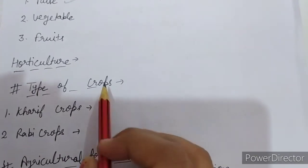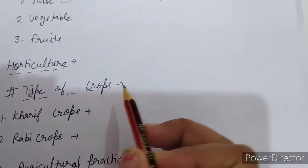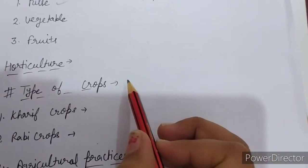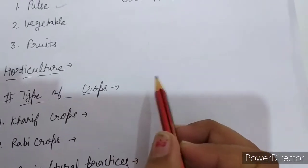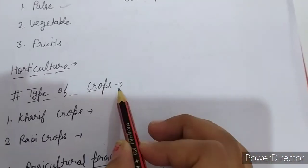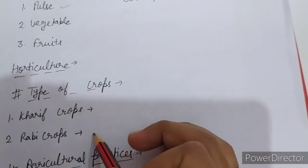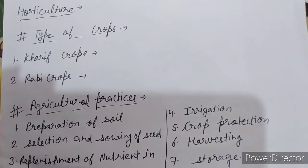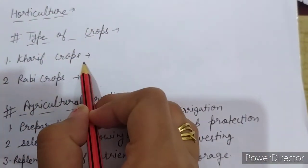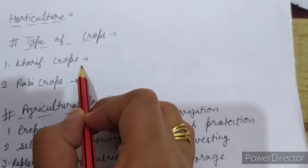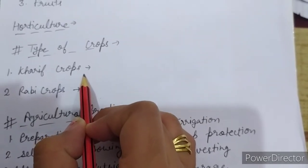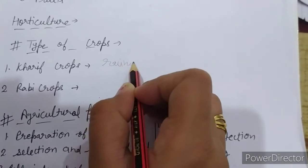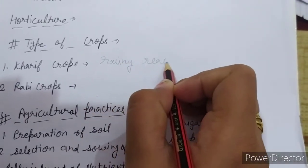Next is types of crops. In India, the monsoon is of different types — means the season in different parts of the year is different. So based on that, there are two types of crops: Kharif crops and Rabi crops. What are Kharif crops? Kharif crops are those which are grown in the rainy season — जिसे हम rainy season में grow करते हैं, वो Kharif crop है।